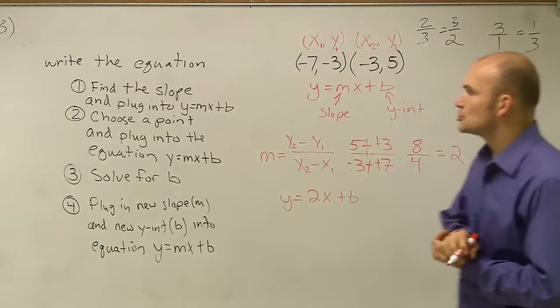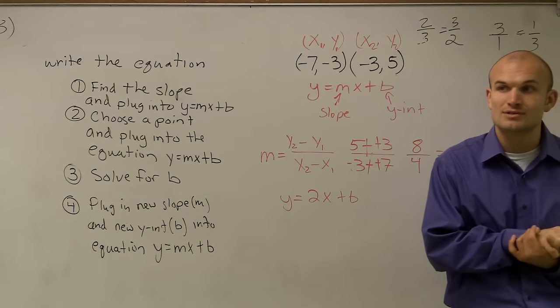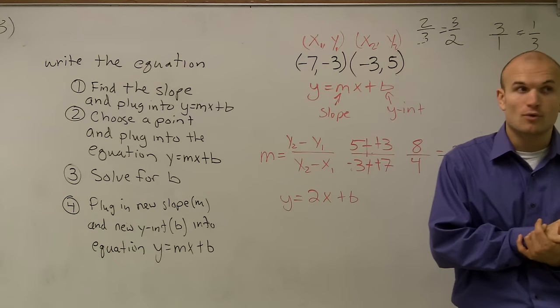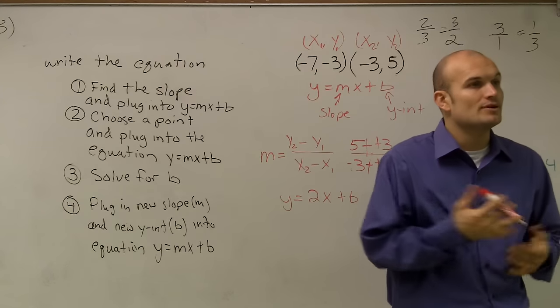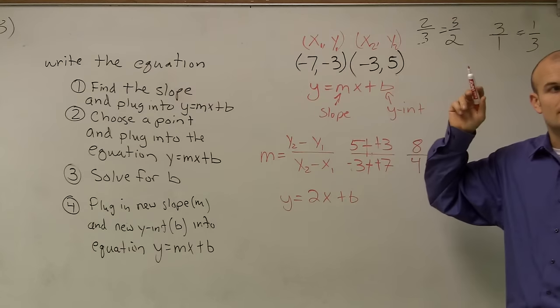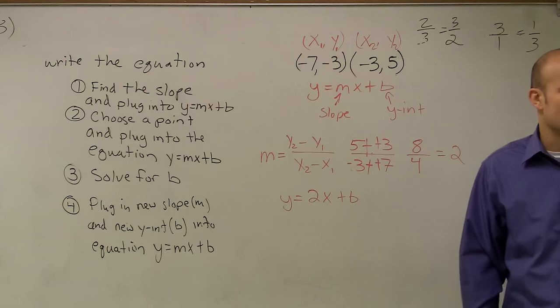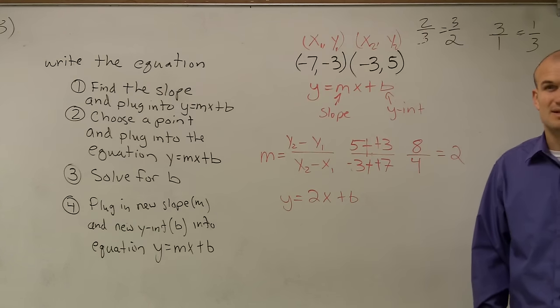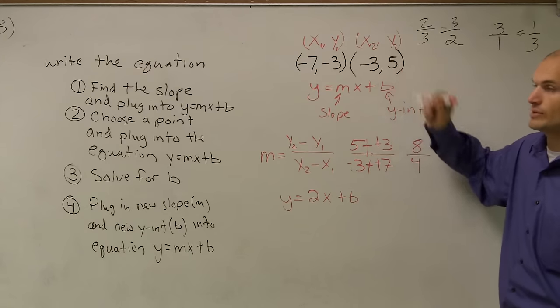And so it says choose a point. Choose. Choose a point. Choose. It doesn't tell you to pick which point to pick. It just says choose. So therefore, you can pick any point you want to. So you can either pick this point or this point. And it just kind of puts on your preference. I usually like to pick the ones that have the least number of negatives, because a lot of times negatives, you'll make little mistakes with them.